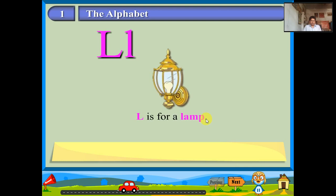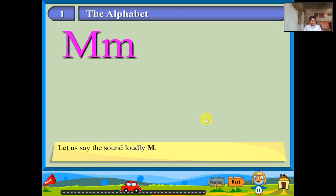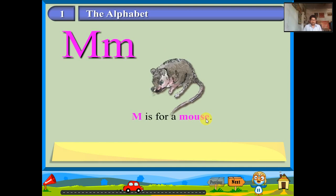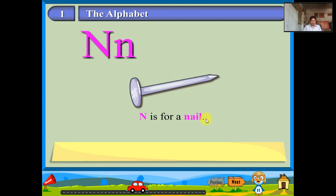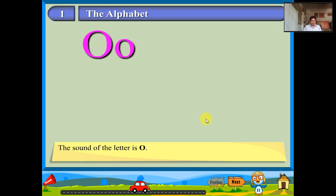The name of the letter is M. Let us say the sound loudly: M. M is for a mouse. The name of the letter is N. The sound is N. N is for a nail. The name of the letter is O. The sound of the letter is O. O is for an orange.